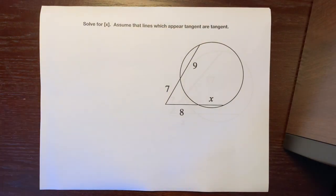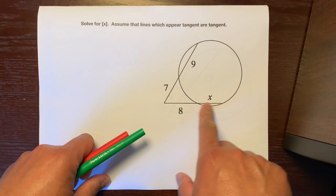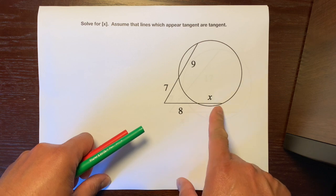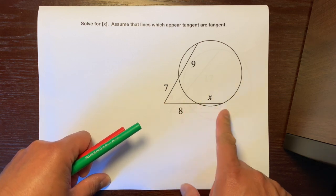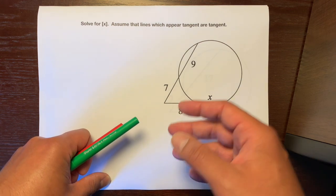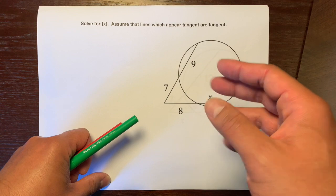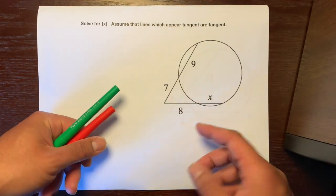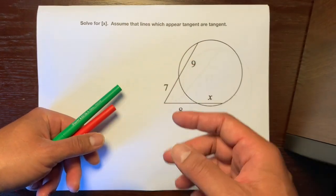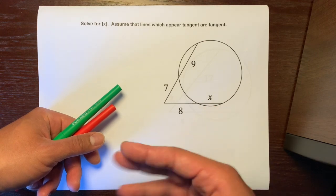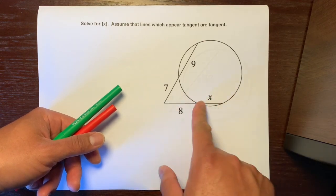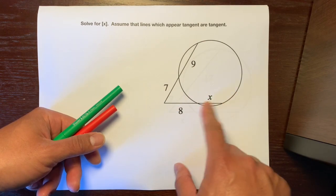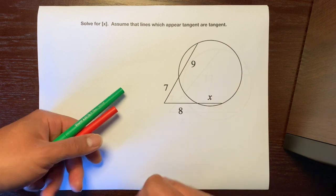So, if you look at this problem right here, the x is on this segment, so we're trying to find a length. We're not trying to find angle measures or arc measures, so we're working with units — not degrees, but inches, feet, or yards — just length. How long is this? What's the distance from here to here?